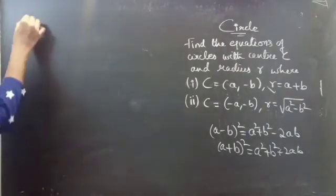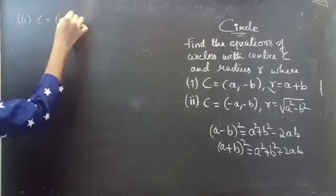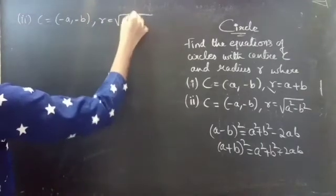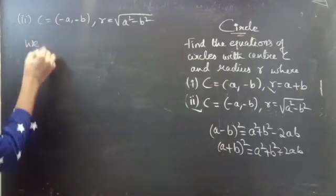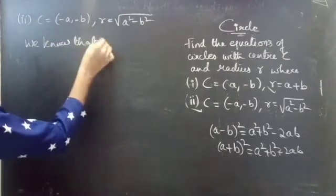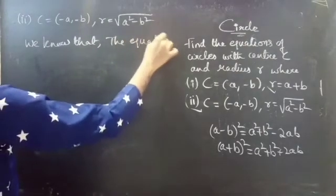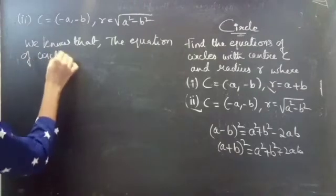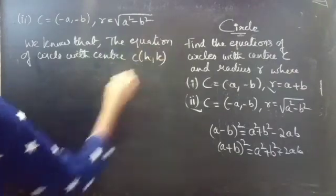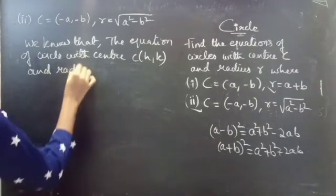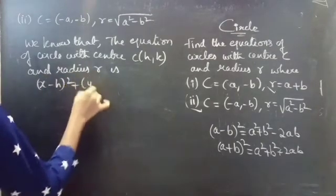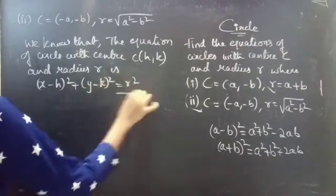Now coming to the second problem. We are given center C equals (minus a, minus b) and r equals square root of a squared minus b squared. We need to find the equation of the required circle. The equation of a circle with center (h, k) and radius r is x minus h whole squared plus y minus k whole squared equals r squared. Let's call this equation 1.